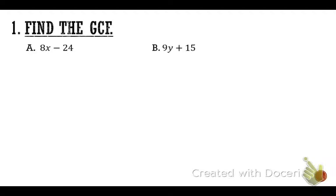The instructions are asking us to find the GCF using those four steps. Step one: choose the smallest number. Out of 8 and 24, which is smaller? The 8. Put an 8 off to the side. Step two tells us to list the factors — remember, factors fit into numbers.